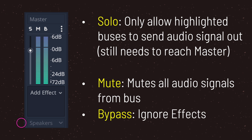Three important buttons to understand about the bus — especially when manually debugging sounds — are the solo button, the mute button, and the bypass button. The solo button, denoted by S, allows only the highlighted buses to send audio signal out. However, in order to hear sounds when the solo button is active, the audio signal must still reach the master bus.